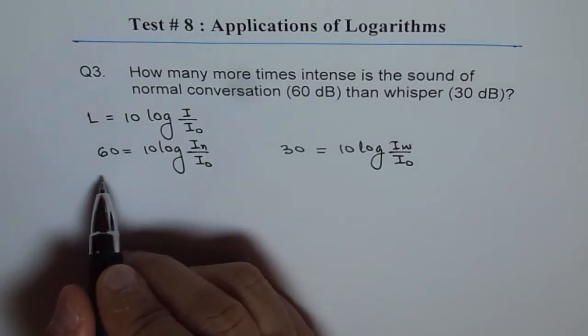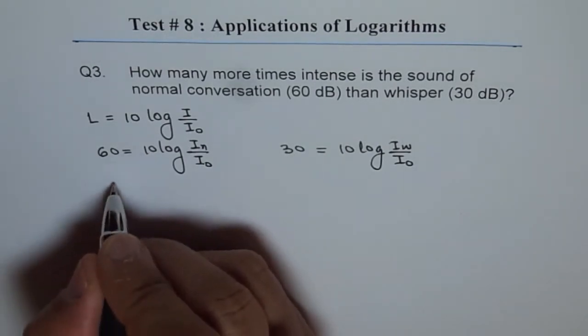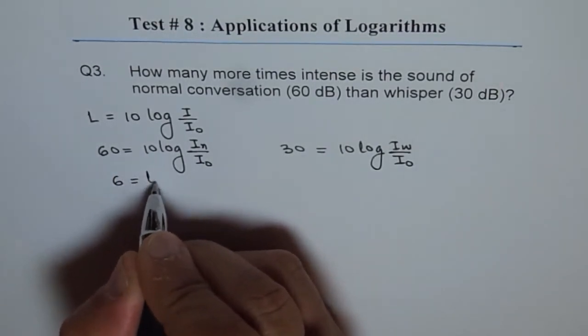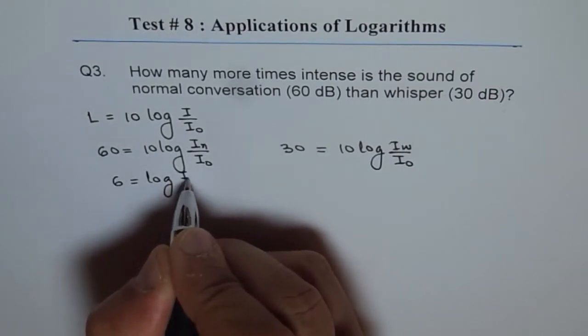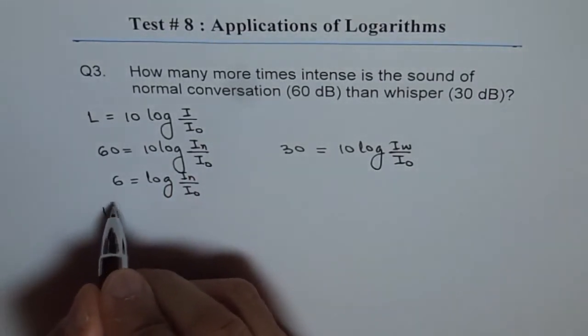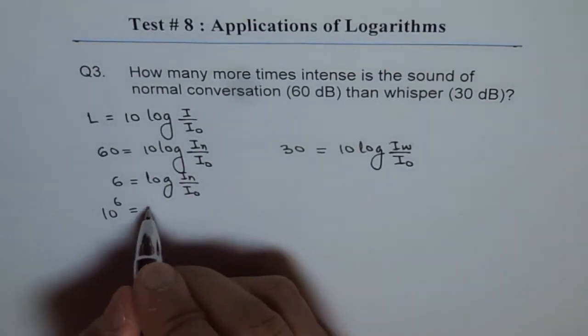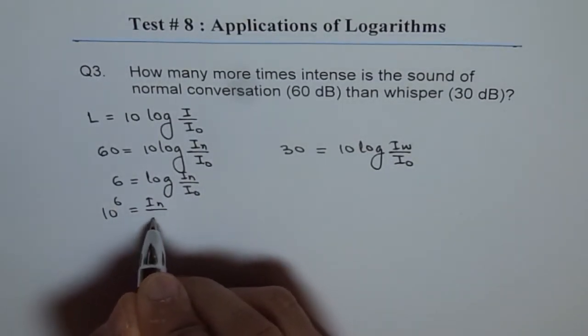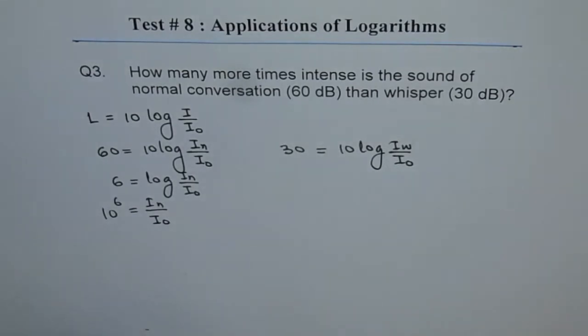Now we can solve that. So 60 divided by 10 is 6, equals log of I normal over I0, and that gives us 10 to the power of 6 equals I normal over I0.